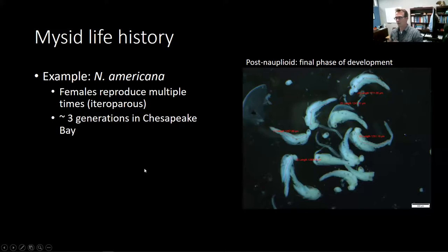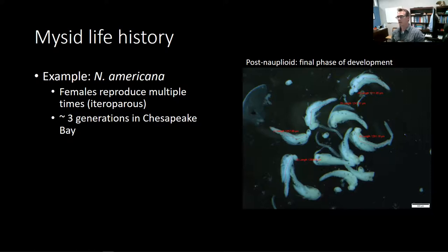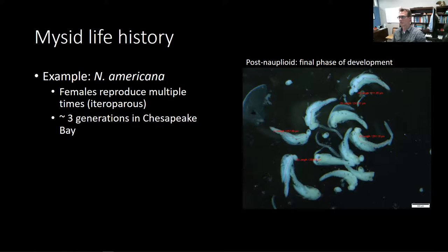Neomysis americana, as well as other species of mysid, will reproduce multiple times — they're what we call iteroparous. There are multiple generations within most ecosystems. There will often be an overwintering generation released as juveniles in the fall, which will grow somewhat throughout the winter and then reproduce in the spring. Because temperatures are so much higher in the spring and summer, those individuals will mature very quickly and reproduce again in the spring and then again later in the summer. We often get two or even three generations of mysids within a population.